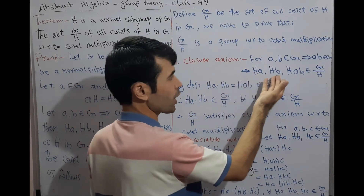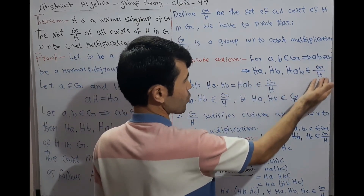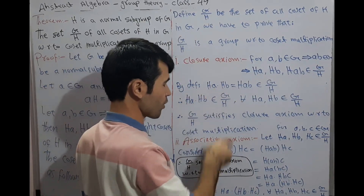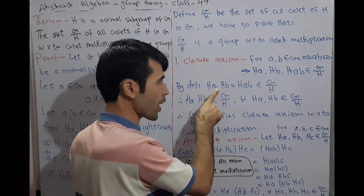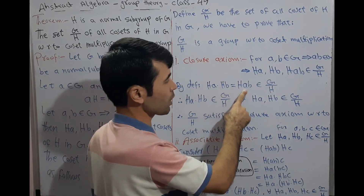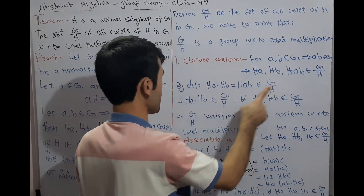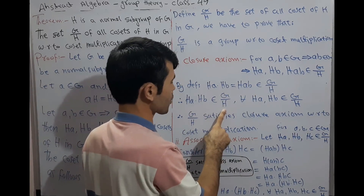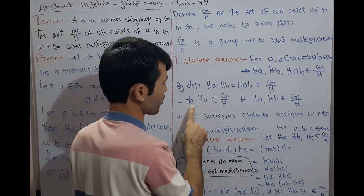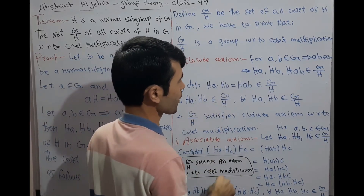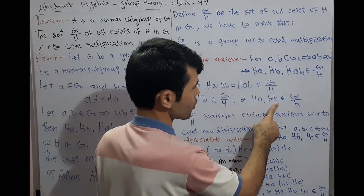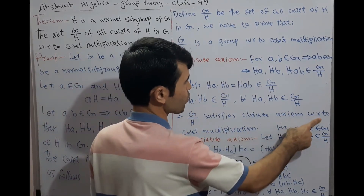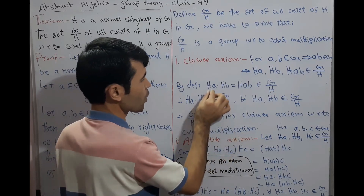For A, B belonging to G, A·B also belongs to G because G is a group, so closure holds. This implies HA, HB, and H(AB) all belong to G by H as right cosets of H in G. By definition of coset multiplication, HA·HB = H(AB) belongs to G by H. The product of right cosets also belongs to G by H for all HA, HB in G by H.